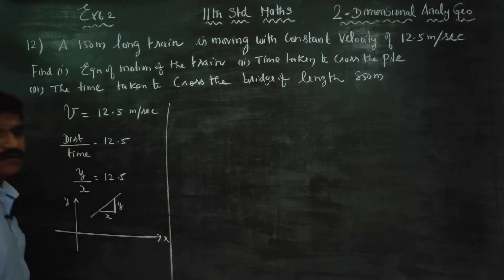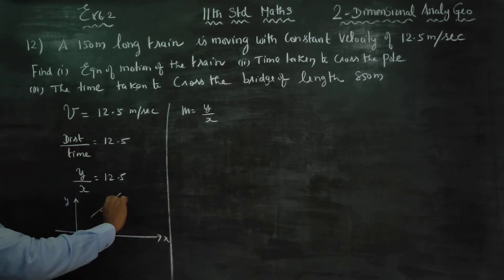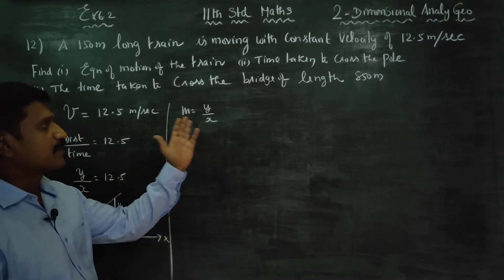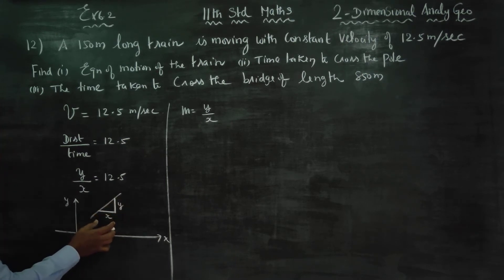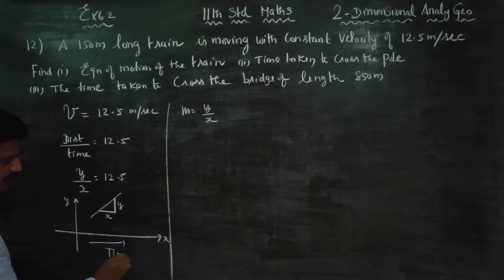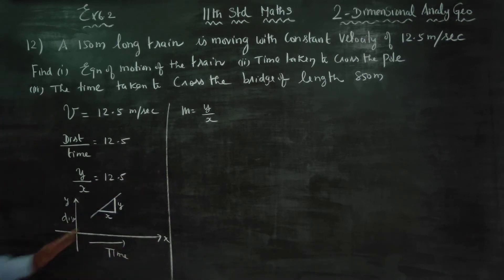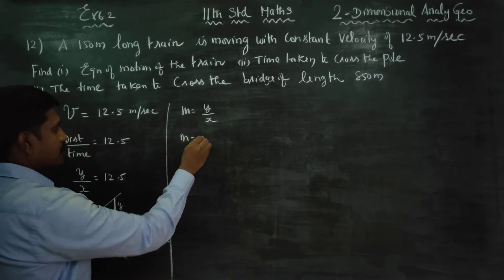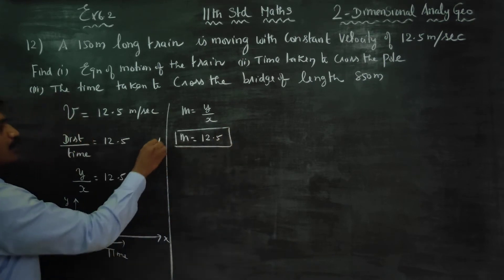Slope m is equal to y by x. y by x is the distance of the y-axis and the distance of the x-axis. Using the graphical method, the equation of motion is a straight line where m is equal to y by x. The slope is 12.5.